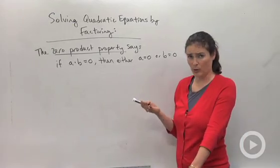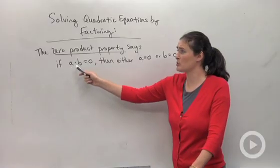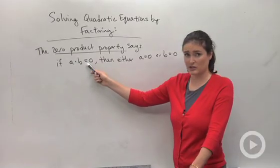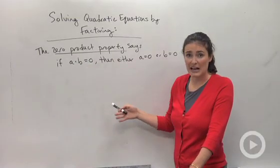And that makes sense, like product means multiplying. And if you have two numbers multiplied together and your answer is zero, then one of those numbers has to be zero.